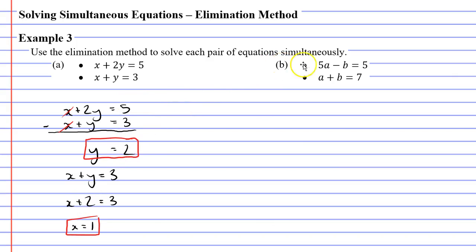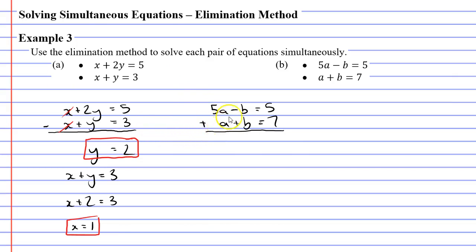We'll now move on to question B. We write one equation above the other: 5a minus b equals 5, and a plus b equals 7. I don't have to write them in the order given — I could flip them. This time I'm putting the line down here and I'm adding, not subtracting. I'm looking to eliminate one of the pronumerals: negative b added to positive b cancels. Sometimes you subtract, sometimes you add — it depends on what eliminates a pronumeral.